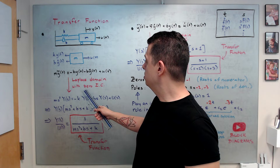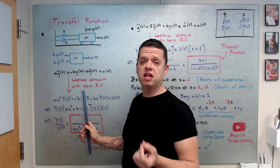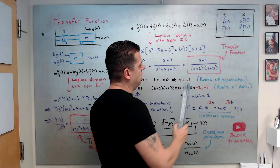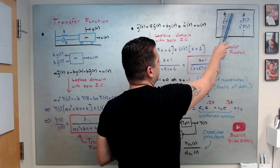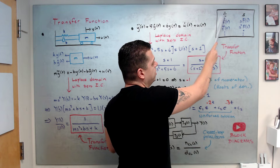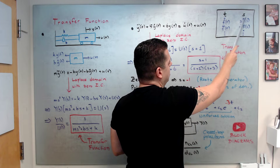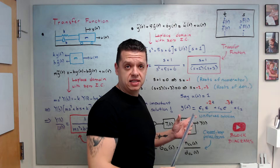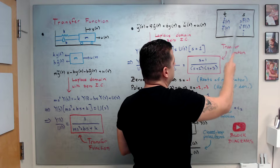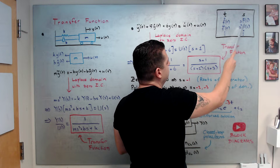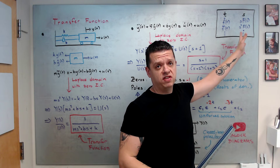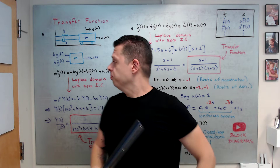Now we are in the time domain. To find the transfer function, we need to go to the Laplace domain subject to zero initial conditions — that's the definition of transfer functions; they are based on zero initial conditions. Let's review: in the time domain versus Laplace domain, f_dot transforms as s·F(s), and f_dot_dot transforms as s²·F(s), and so on for higher derivatives.